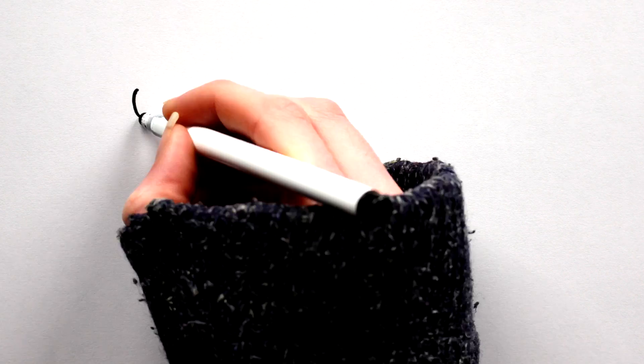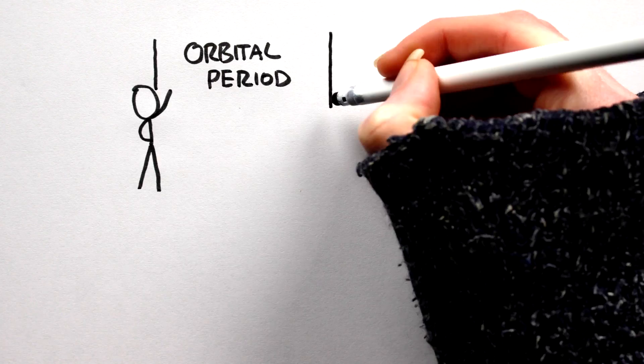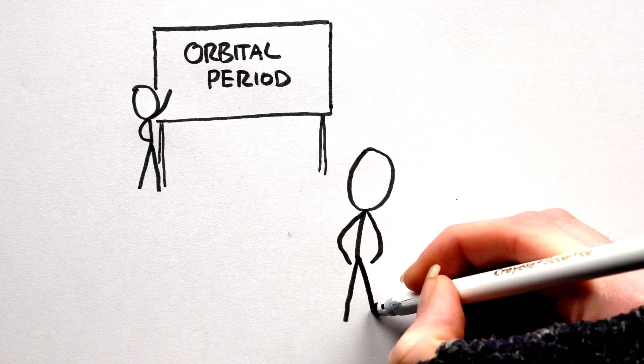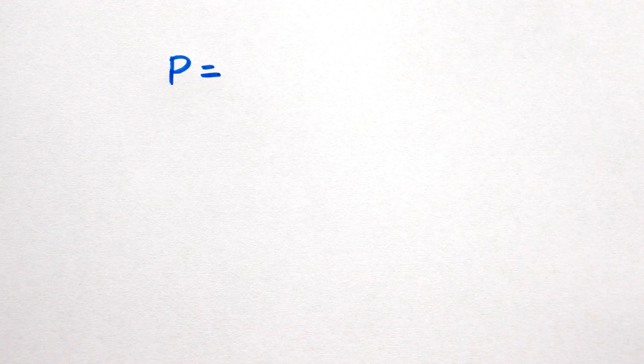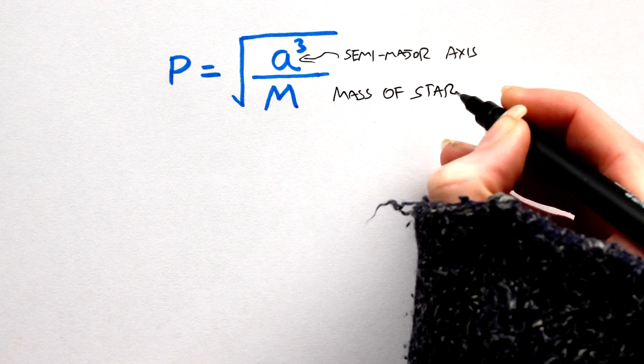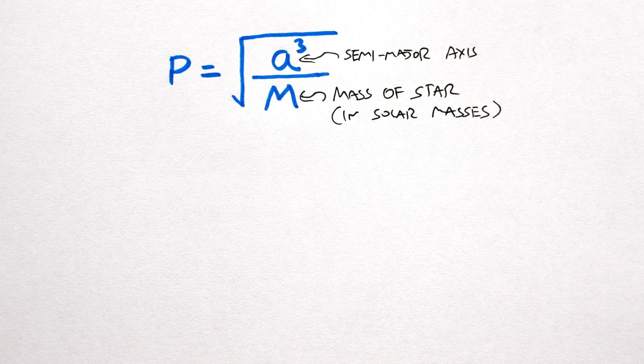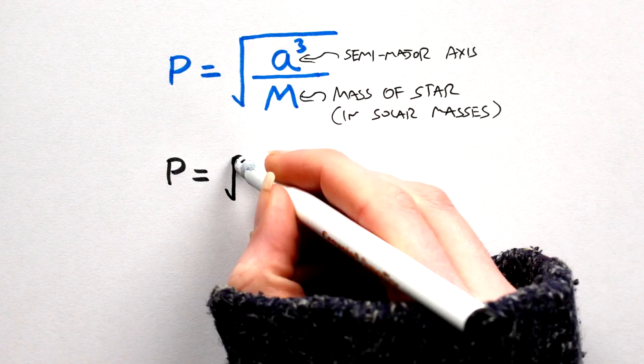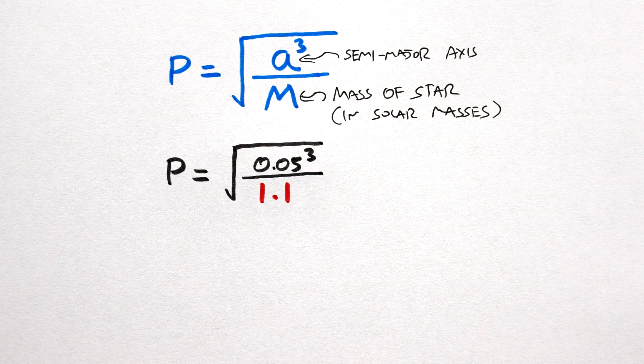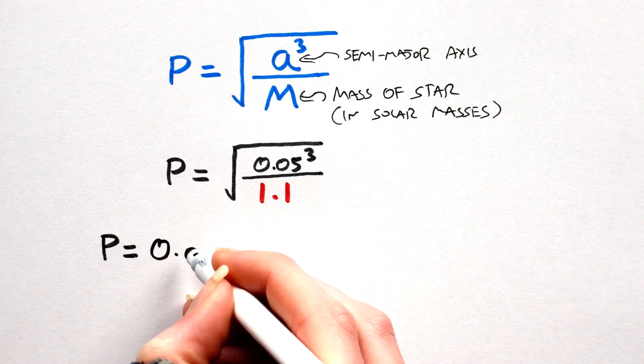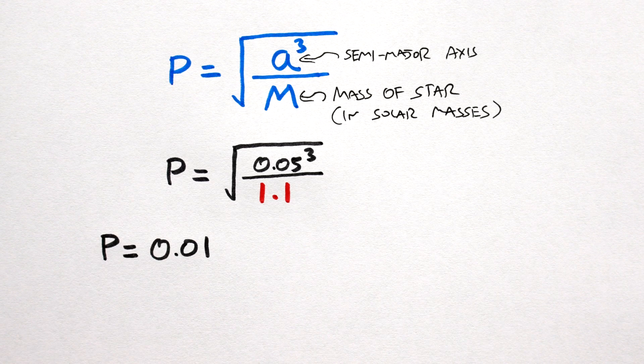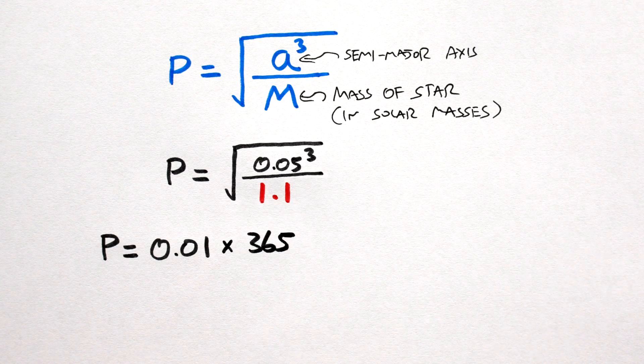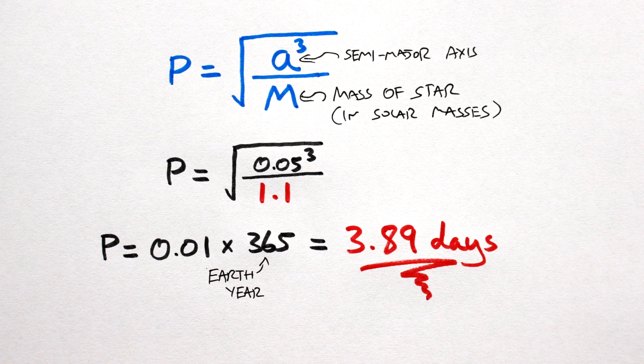Orbital period. And now for the bit that really matters when it comes to worldbuilding. The orbital period, or year length, is given by the square root of A cubed divided by M, where A is the semi-major axis and M is the mass of our star. So let's say our star has a mass of 1.1 solar masses. Plug in the numbers and we get a year of 0.01 Earth years, or in other words, 3.98 Earth days.